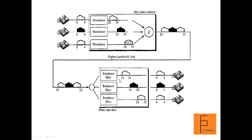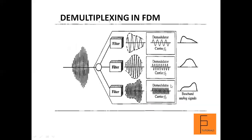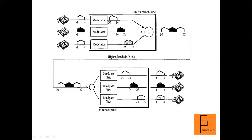The first signal with a range of 20 to 24 passes through a demodulator which, using a carrier frequency, extracts the original signal with bandwidth from 0 to 4. Similarly, the signal from 24 to 28 and 28 to 32 each pass through demodulators using their respective carrier frequencies — the same frequencies used in the corresponding modulators. The demodulators use these carrier frequencies to separate out the original signals, and each output signal has the same range of 0 to 4 as the original input.